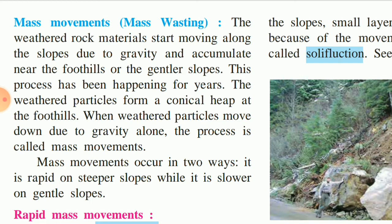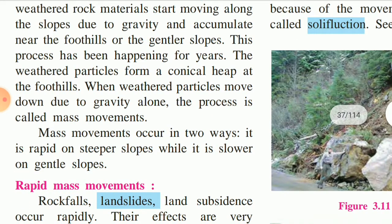A large number of particles fall over each other and a conical heap is formed. When weathered particles move down due to gravity alone, this process is called mass movement. All the broken particles of the weathered rock, because of gravity, start rolling down and fall, forming a heap. This process by itself is called mass movement.